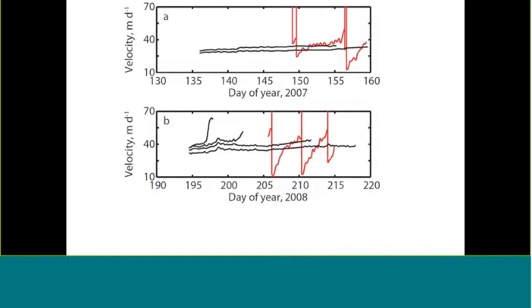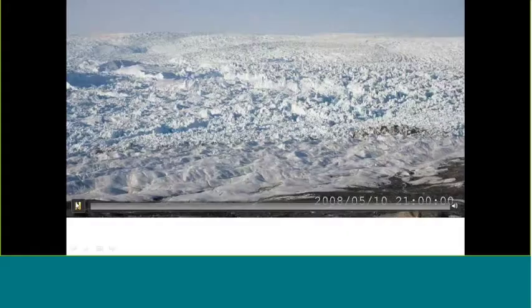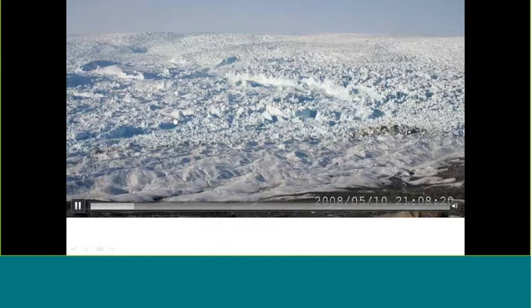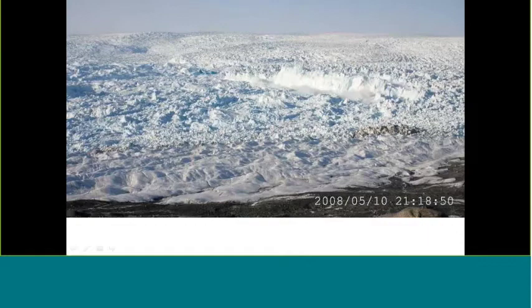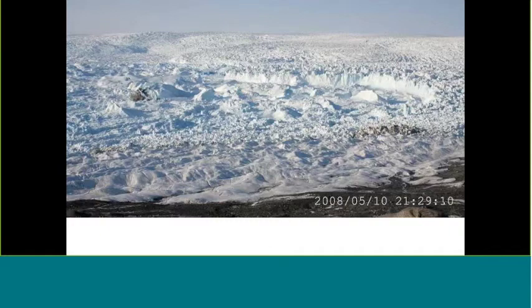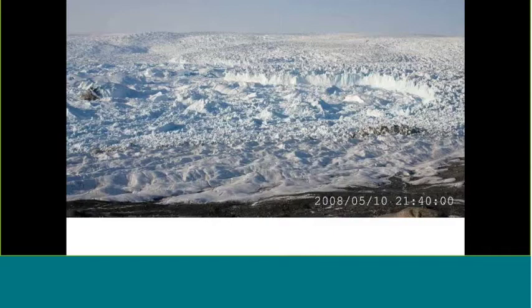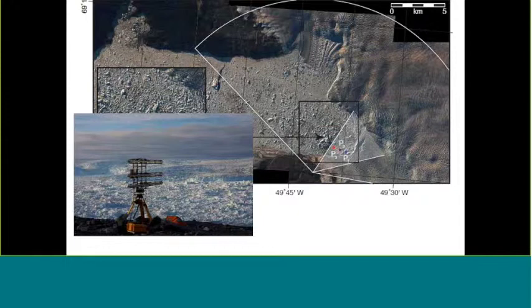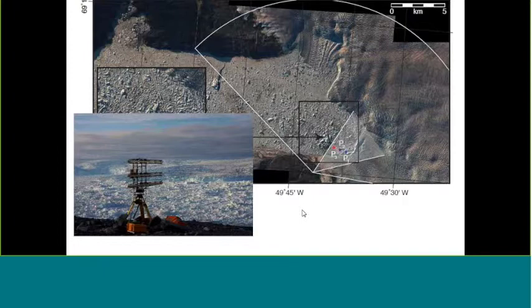Here's what one of the calving events looks like. We start with the ice melange being very stable, and then within a matter of minutes it accelerates to something like a kilometer per hour. You can see the different shear margins where the icebergs are moving past each other or past the side of the fjord. We followed that study with another in 2012 where we visited the glacier and fjord with a terrestrial radar, scanning every three minutes, so we had an instrument that could observe ice melange motion in a way that wasn't possible before.